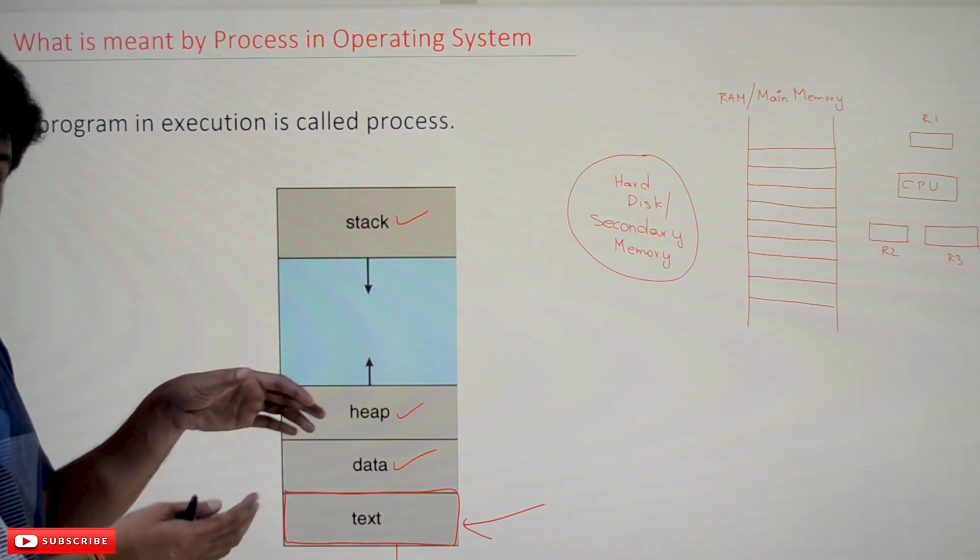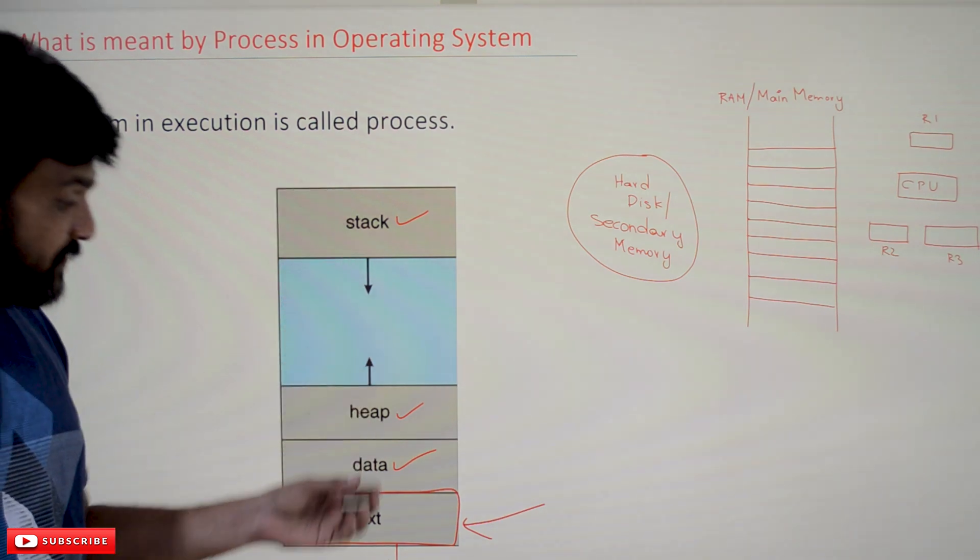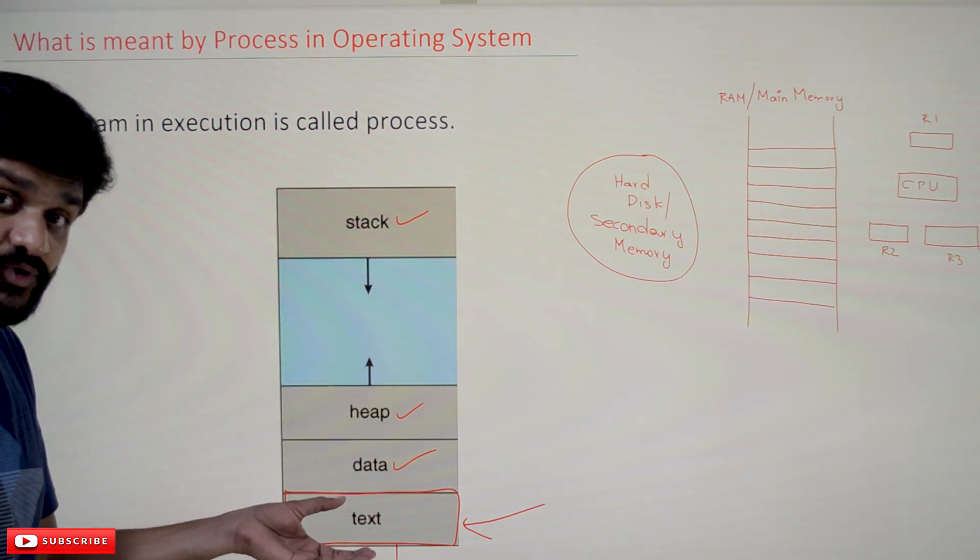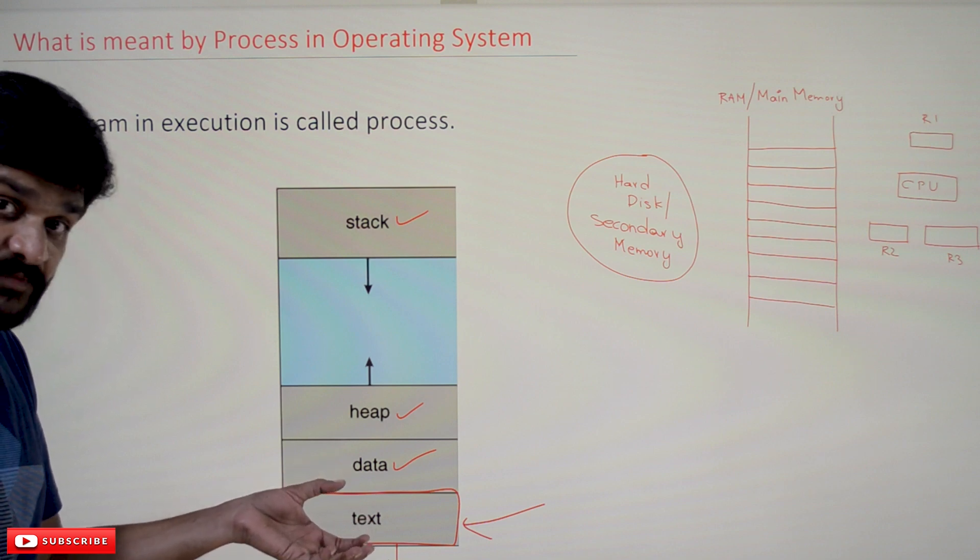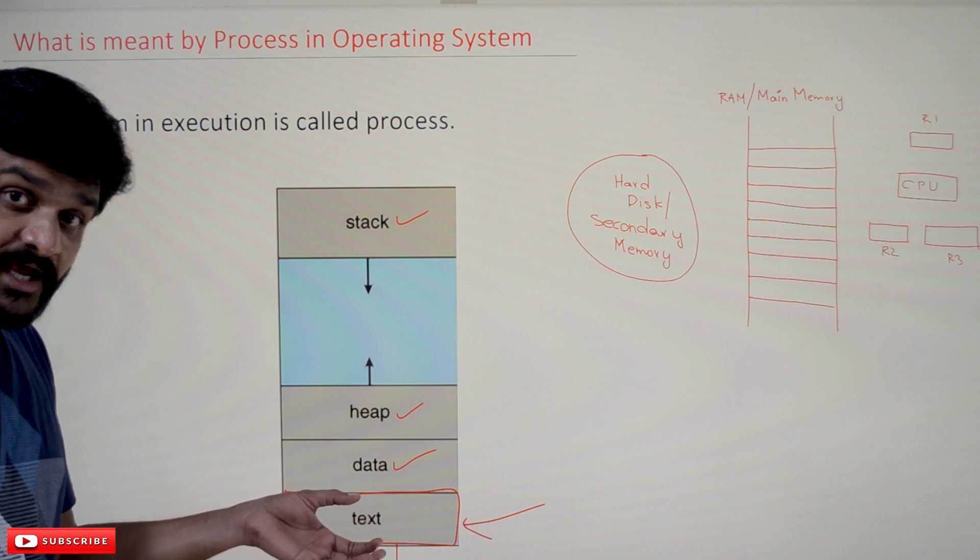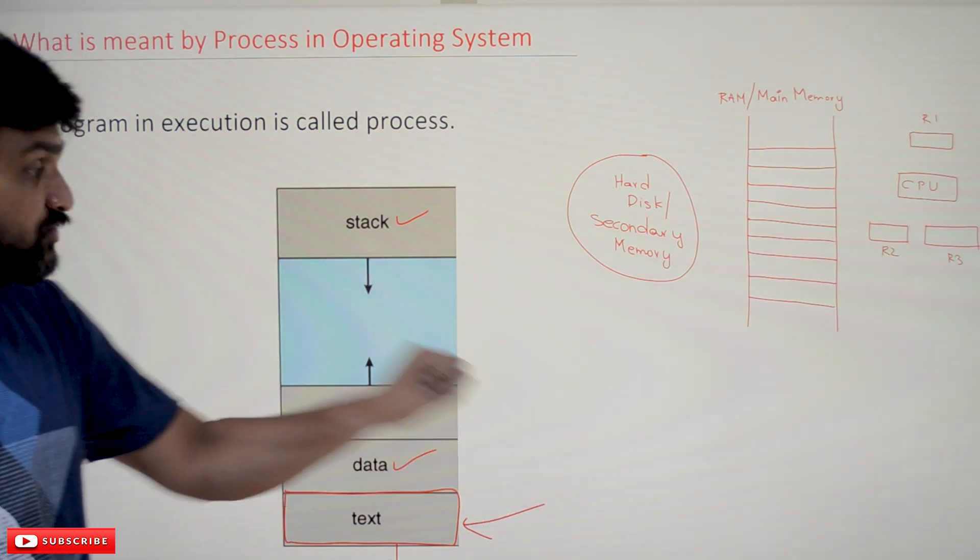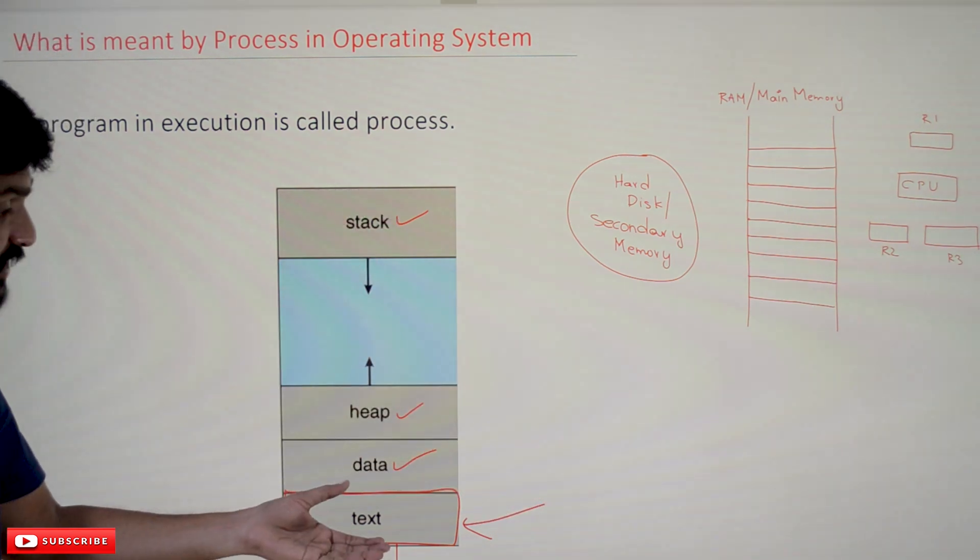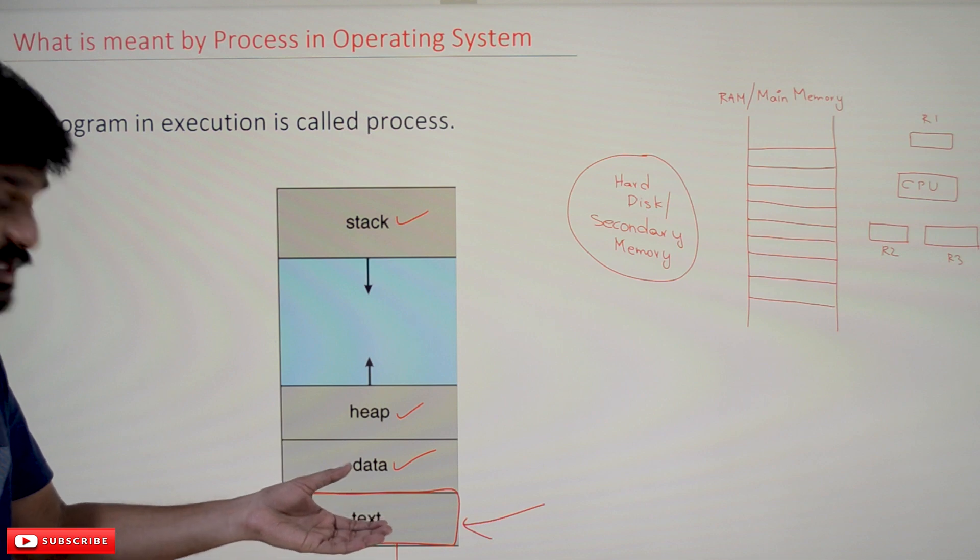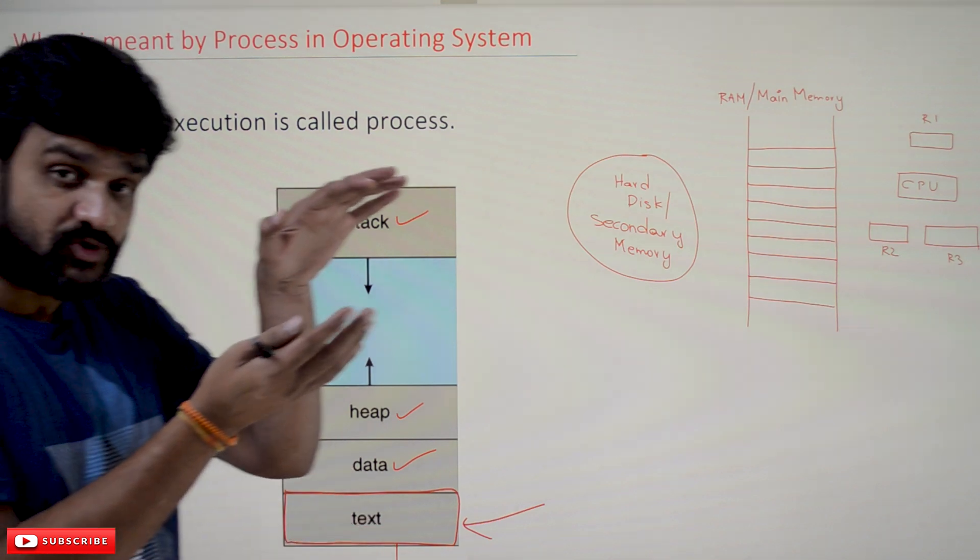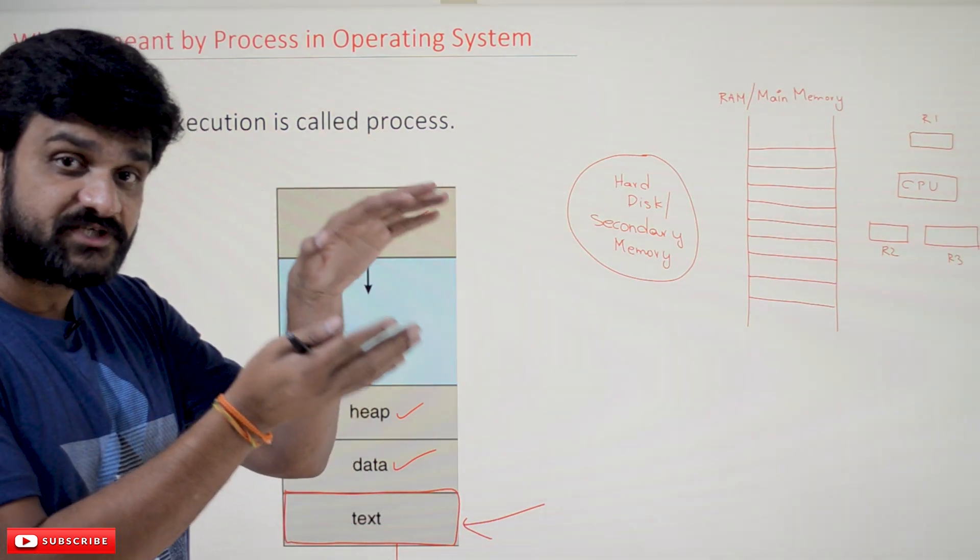This memory is used for the program to execute. Whenever a program is getting executed, it uses this memory for the execution of that program. Whenever a function call is made, the details about that function call—the local variables of the function—will get stored.